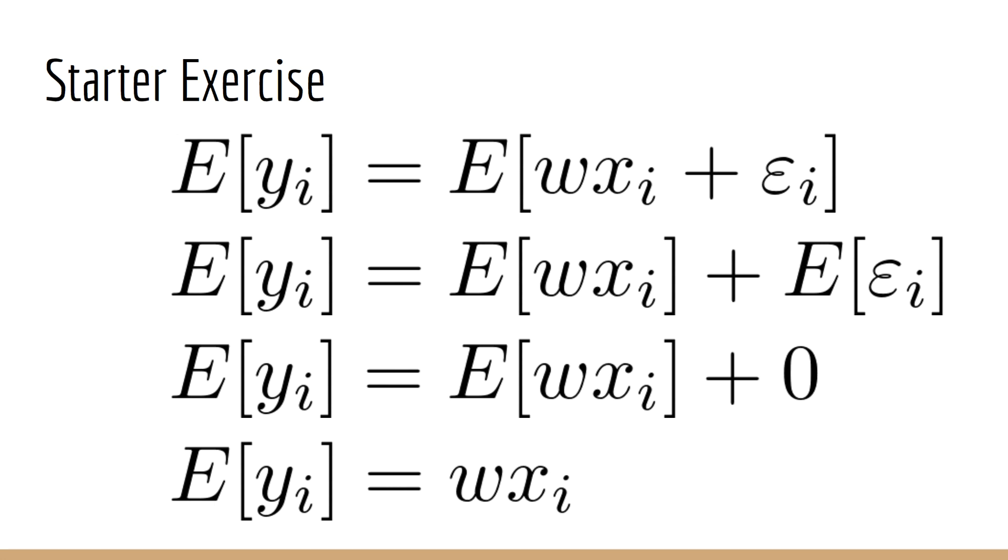In order to find this, we simply replace y sub i with our model for y sub i, which is that it's w times x sub i plus epsilon sub i. We know that epsilon sub i has mean zero, and the expected value is the mean, and therefore that part is zero. What's left is w times x sub i, both of which are not random.